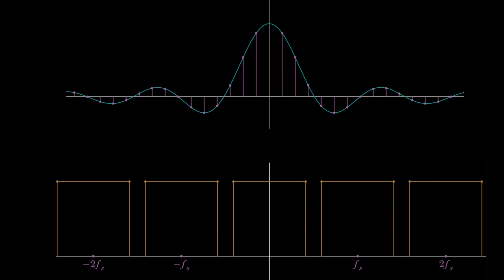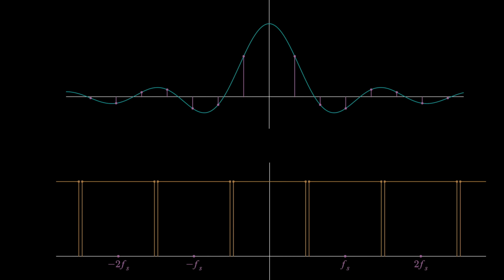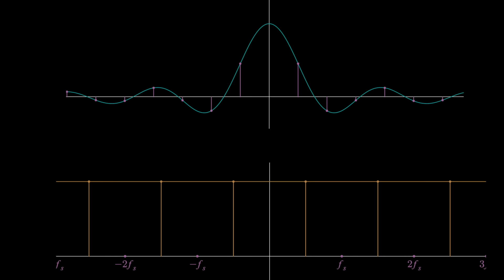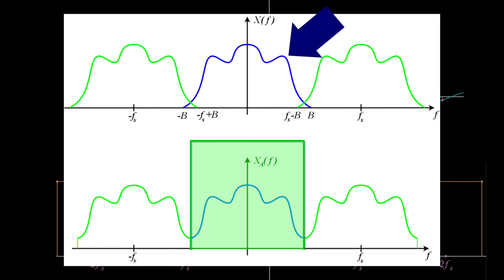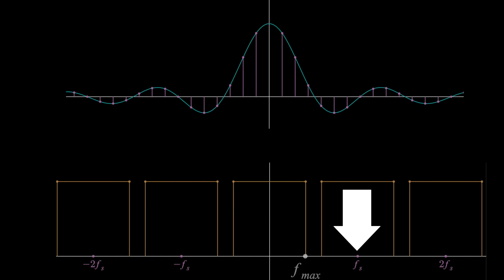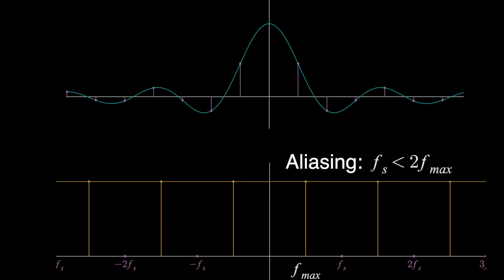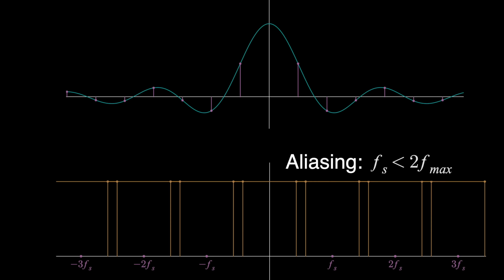Now, because these copies happen at integer multiples of the sampling frequency, if you sample at a slower rate, those copies start to come together until you reach a point where they intersect and combine. This is called aliasing, and that's when you lose information, because even when you apply a filter, you're not getting back the original signal. There's distortion due to the slow sampling and the resulting interference in the frequency domain. And that aliasing will happen once your sampling frequency dips below twice the highest frequency in your signal. That's where the overlap starts to happen, and if you sample slower and slower, you get more interference where these would add together, and you could not reconstruct your original signal.